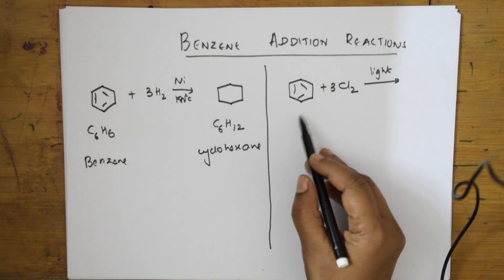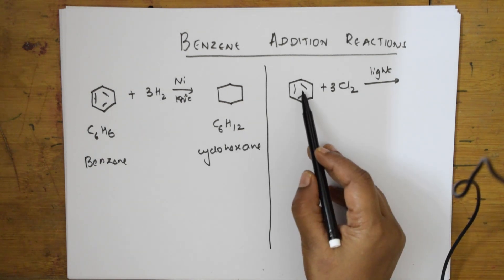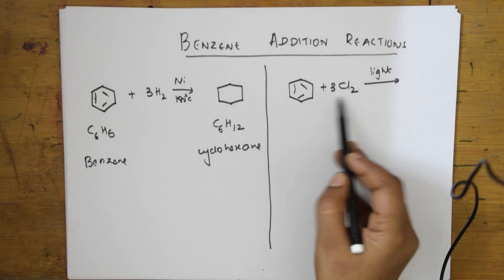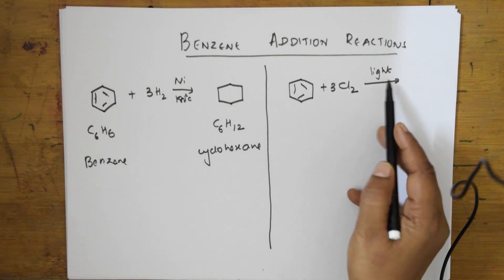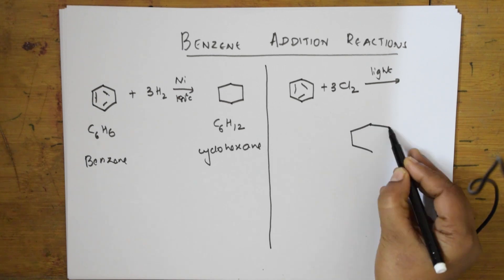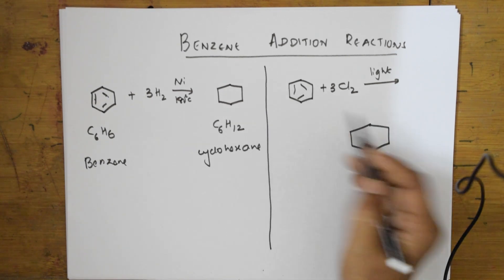Here also, benzene has three pi bonds, so I am adding three chlorines. In the presence of light it breaks open. That means the pi bonds are broken.